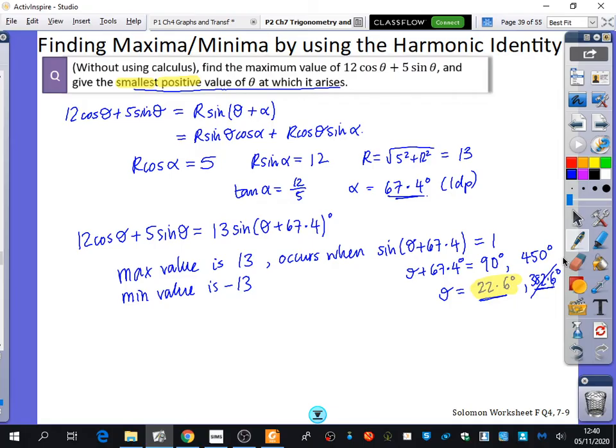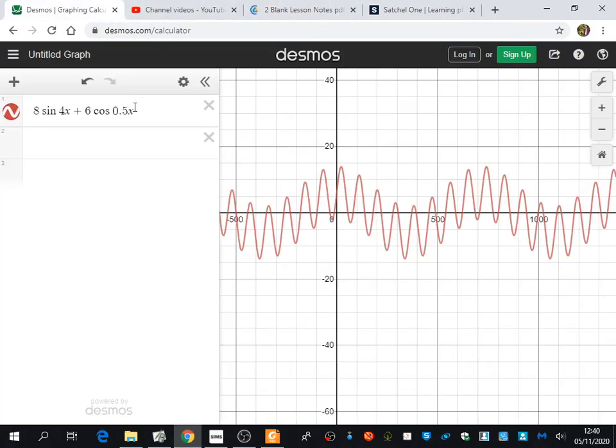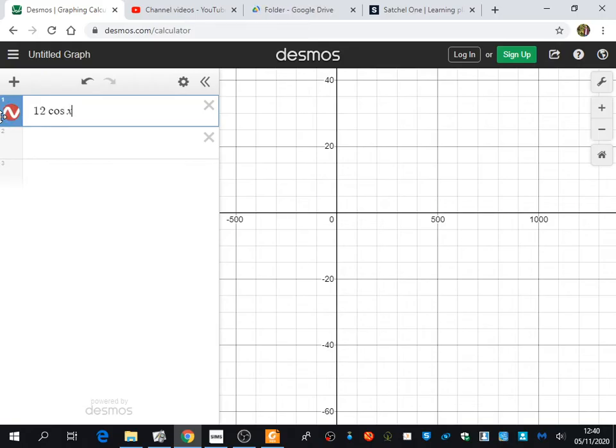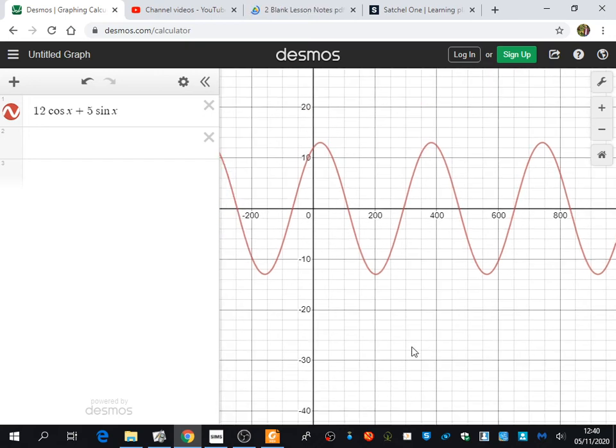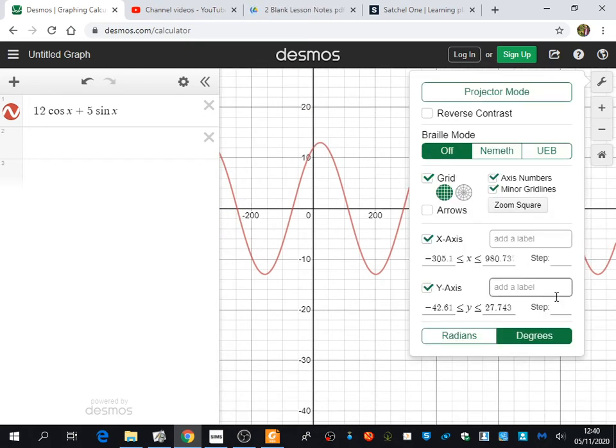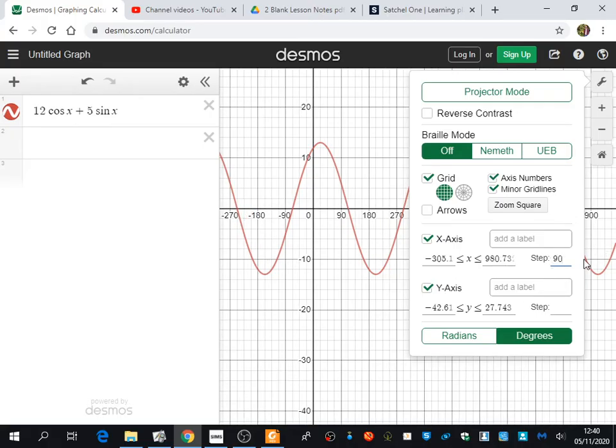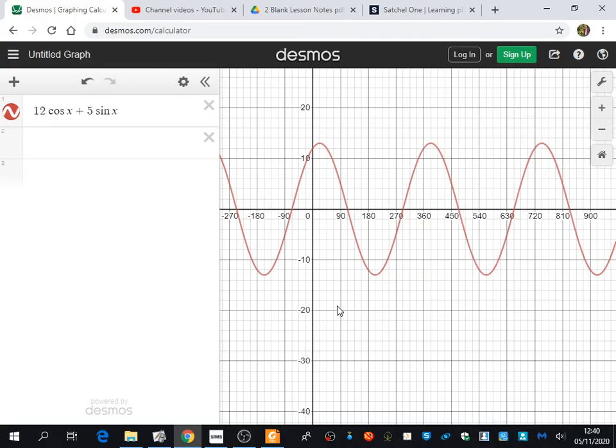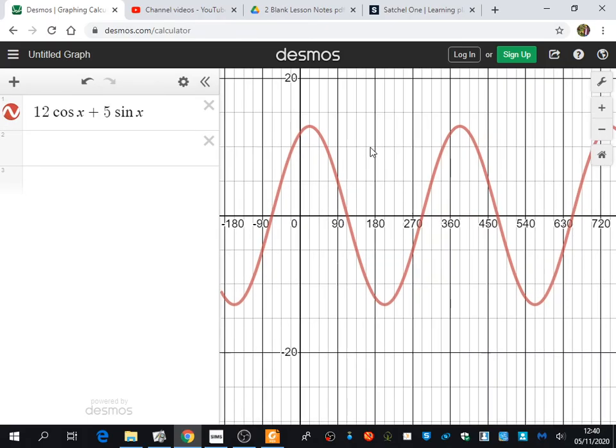And I'm going to put all of this on Desmos so that we can see what's happening. So it is 12 cos theta plus 5 sine theta. 12 cos x plus 5 sine x. Let's just quickly change the step of the x to 45 degrees or 90 degrees.